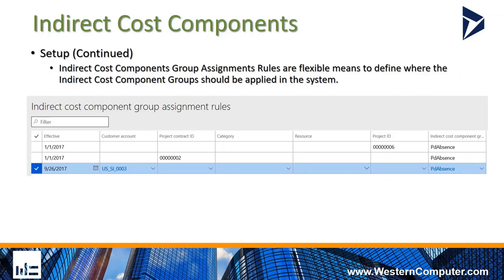This is where the indirect cost component groups are assigned to your projects. There is flexibility here — you can assign them based on the customer account, your project contract, your project ID, and categories and resources are also available. So there's some flexibility in how these indirect cost component groups are assigned in the system.